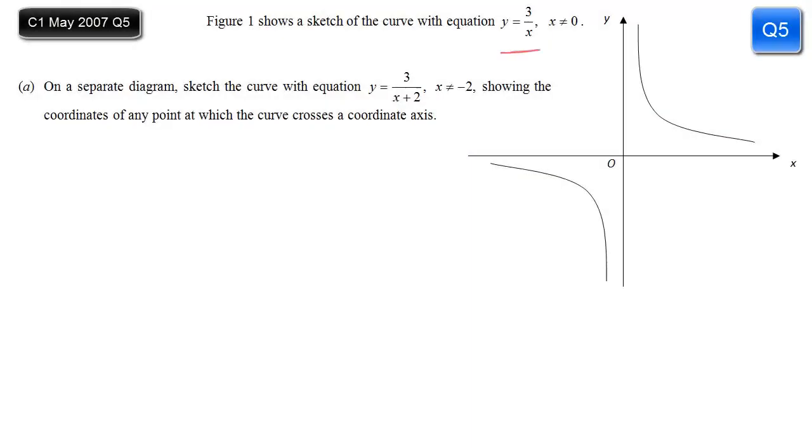In this question we're given a sketch of the curve y = 3 over x. I don't know why they'd really give you this, because this is an easy graph to sketch and you should know it anyway. But there we are. So we're asked to sketch a related curve, y = 3 over (x + 2), on a separate diagram, and make sure we state the coordinates where it crosses any axes. So to do this we need to compare the equations, the one that we've got and the one that we're trying to plot. Let's call the one that we've got f(x). So f(x) is 3 over x. If we then say, well what's my new curve going to be in relation to this, compare what we've got. In the denominator, the f(x) has x there, the new one has x + 2. So x has just been replaced by x + 2. So rather than f(x), we have f(x + 2).